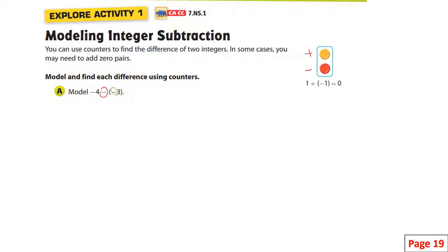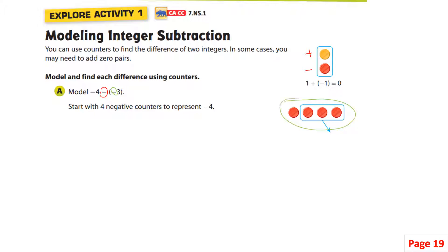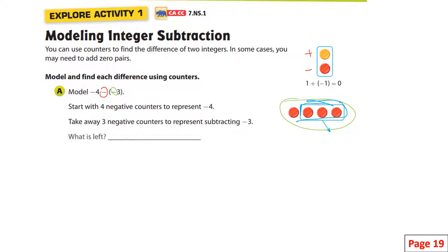We start with four negative counters to represent negative four. When we subtract, we're actually taking away. Here are the four negative counters. That blue box right here is representing that we're going to take away those three negatives. And there it is — so what's left?